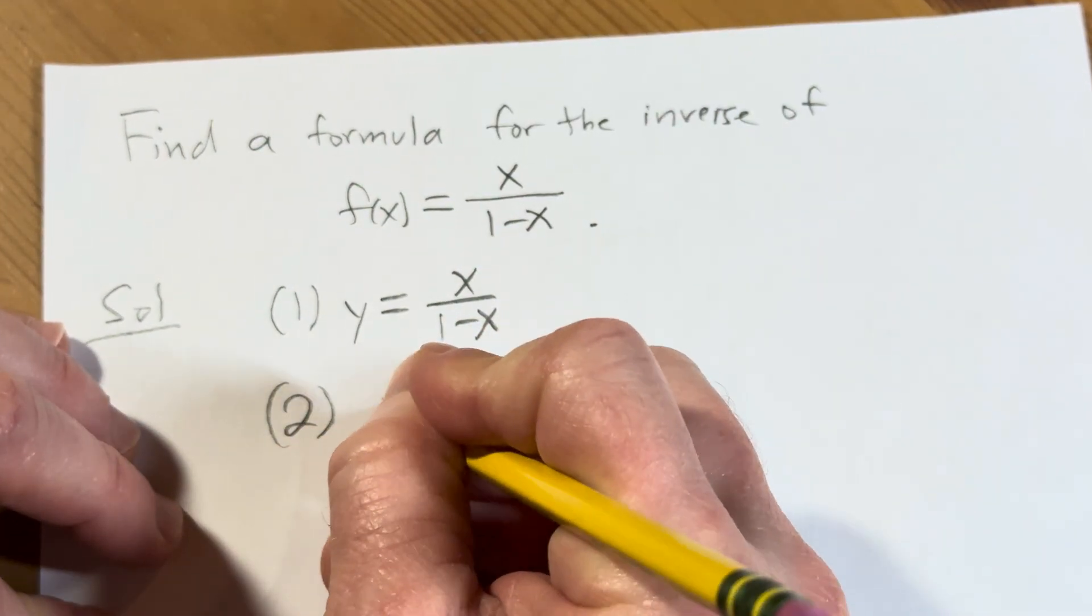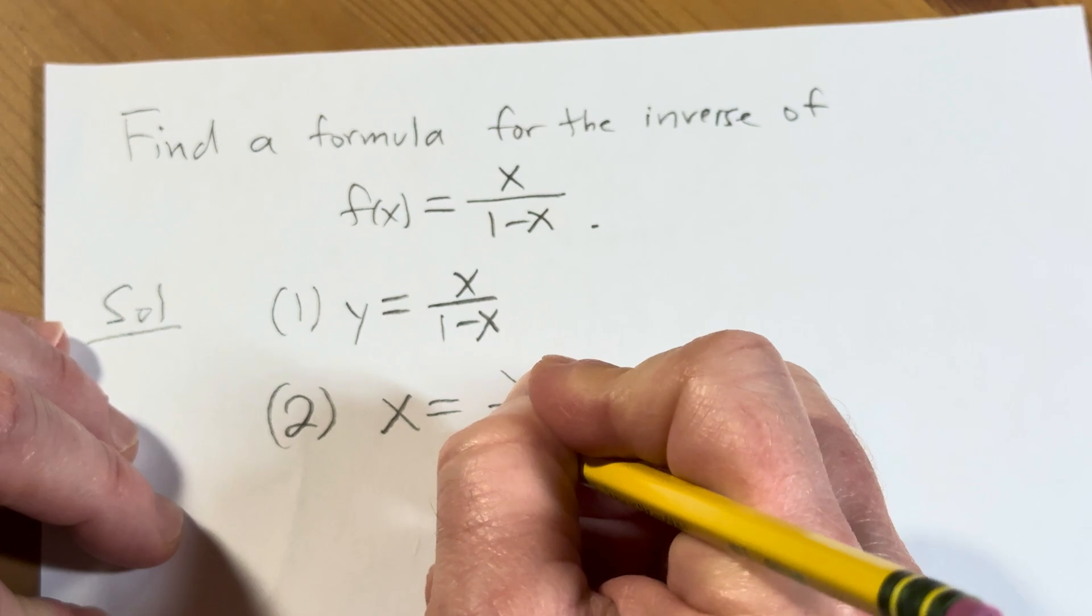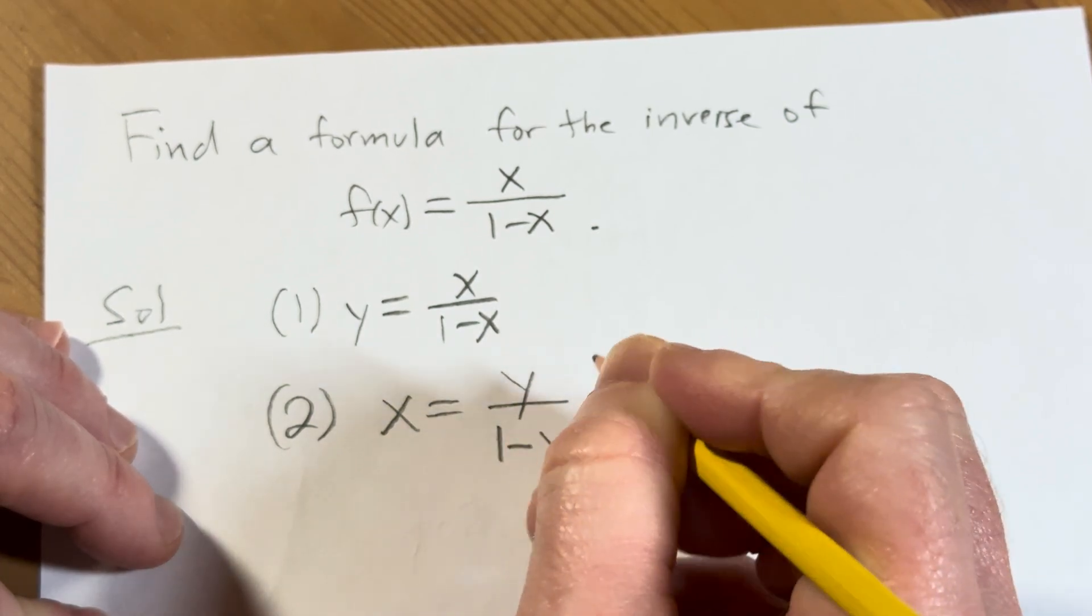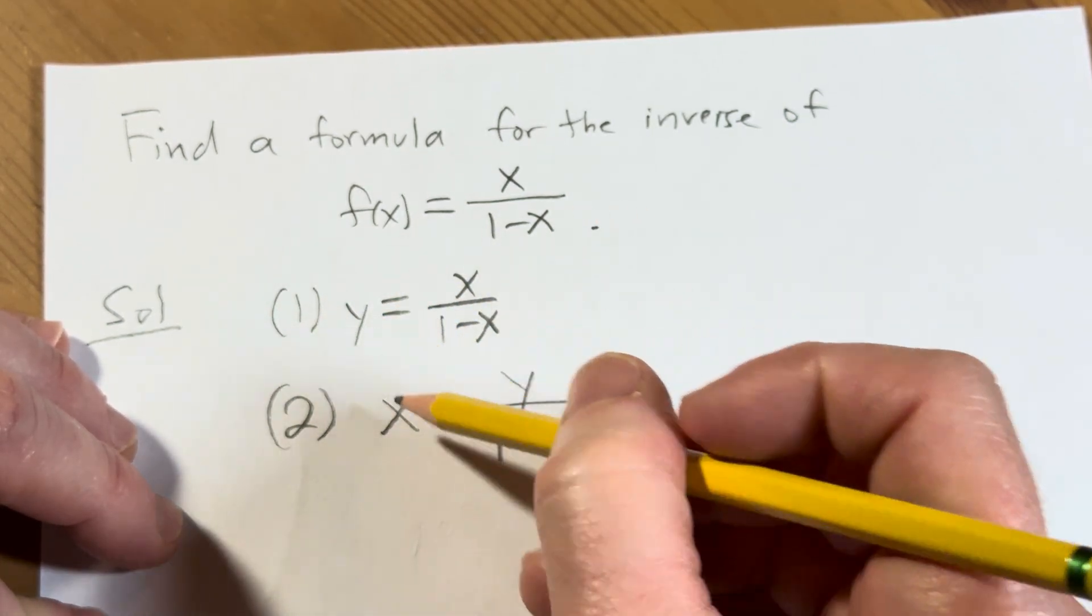Step two is to switch x with y. So your x's become y's and your y becomes x.